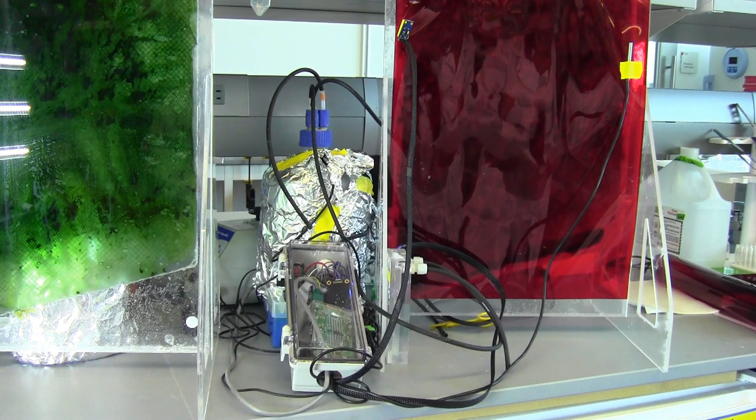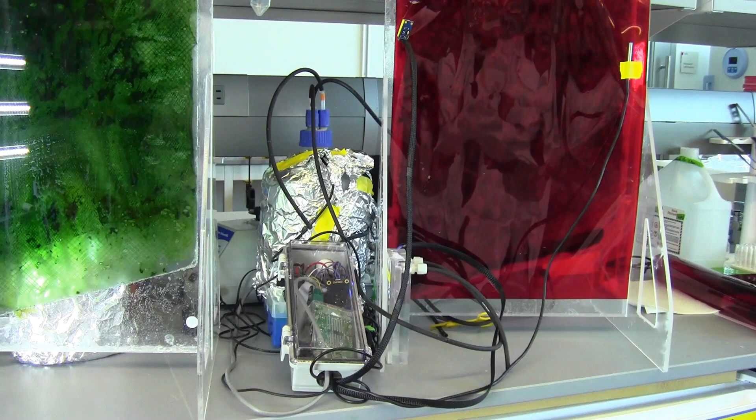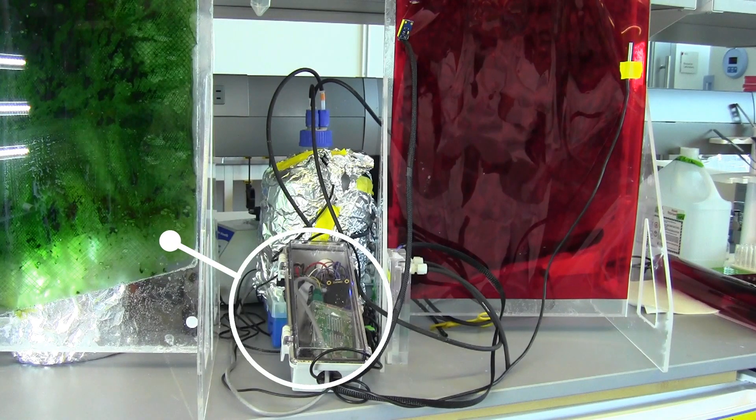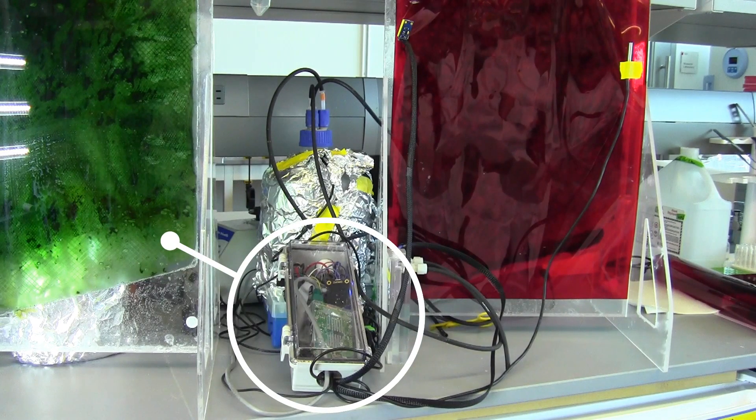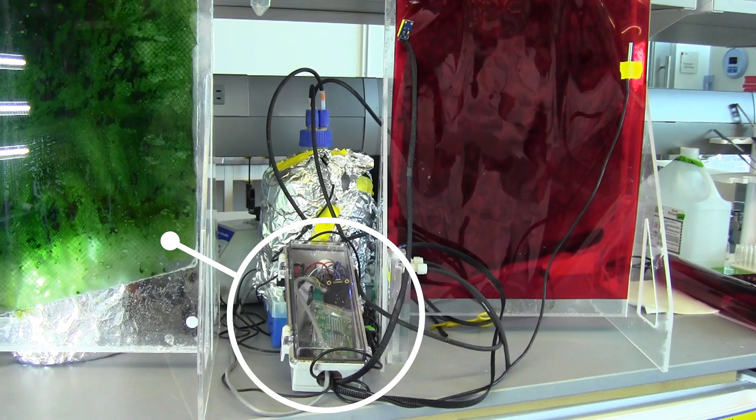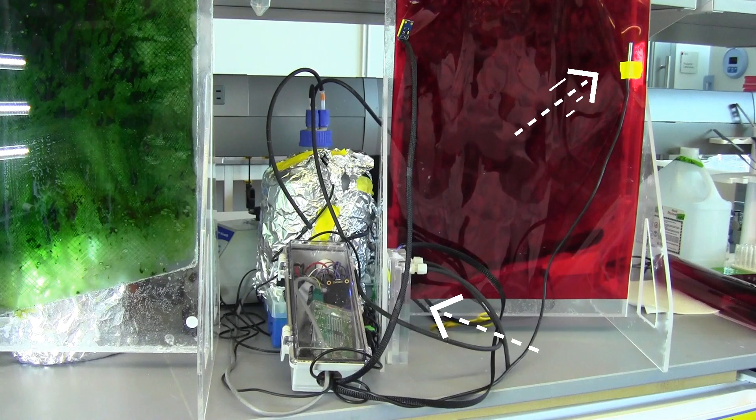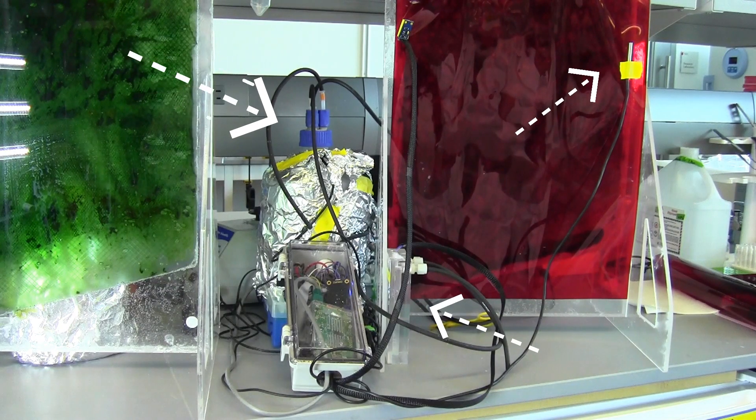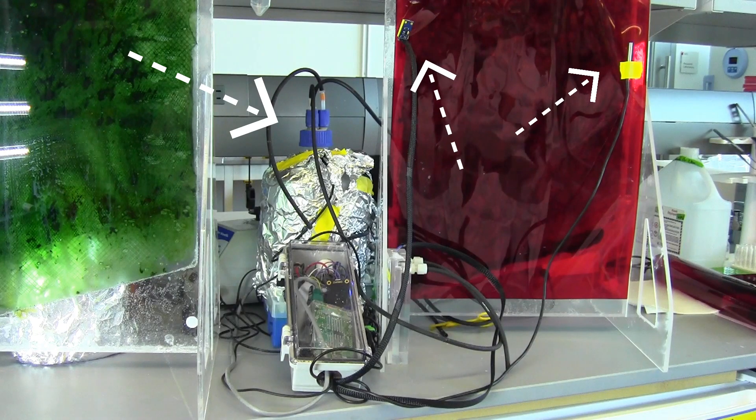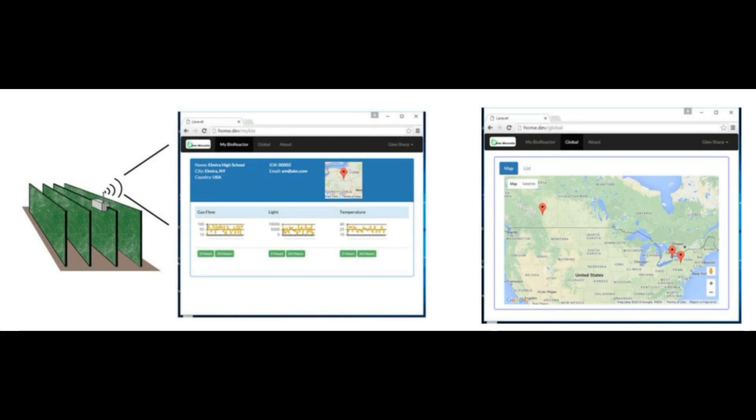This is what you will be getting in your classroom. The key features of the bioreactor for students is the Raspberry Pi, which will take in data from the oxygen sensor, the temperature sensor, the pH sensor, and the light intensity sensor. This data will be sent in real time to your website, allowing you to compare the growth of your bioreactors with other classrooms around the world.